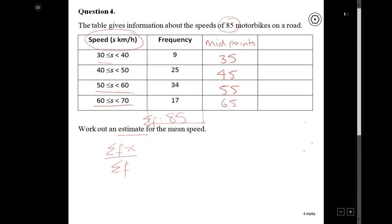Now, sigma fx is the total of my frequency times this thing called x. And when we have the midpoint, x is my midpoint. So in this column over here, we can have f times x, which is just going to be my frequency times my midpoint. So this one over here, I'll just work out the working for this one only. So this one will be 9 times 35, which will be 315.